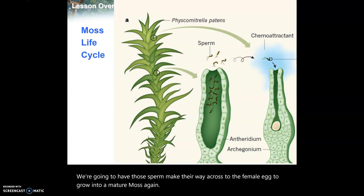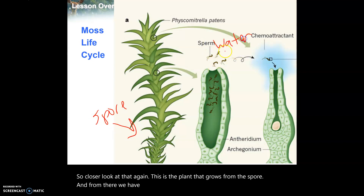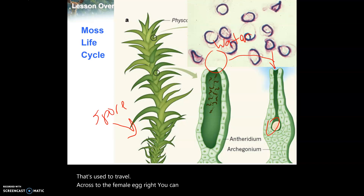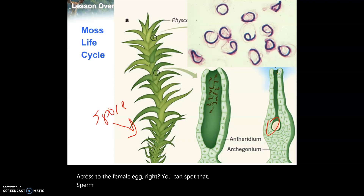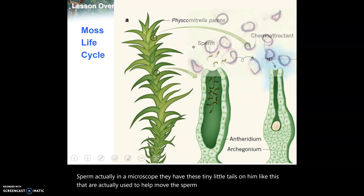For a closer look: this is the plant that grows from the spore, and from there water is used to carry the sperm across to the female egg. You can actually spot sperm under a microscope - they have tiny little tails called flagella that help move the sperm through the water.